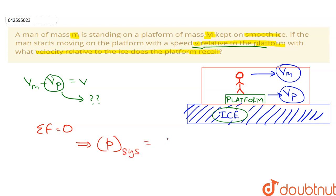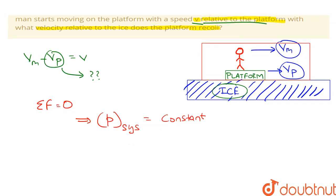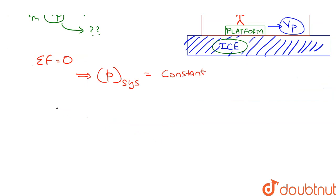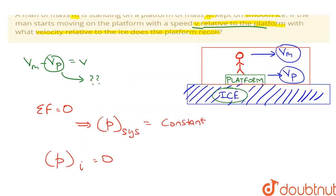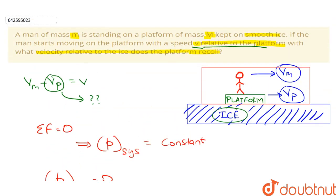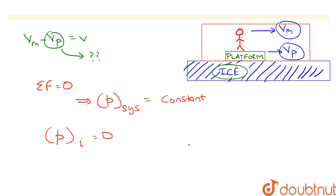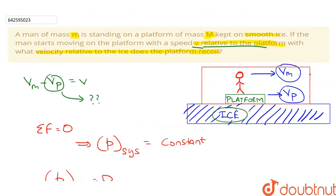is constant. So pi, the initial momentum, equals zero because both the man and the platform have zero velocities with respect to the ice. When the man starts moving with speed v relative to the platform, the momentum becomes pf, equal to m × vm